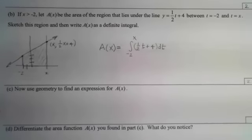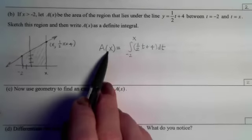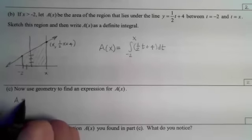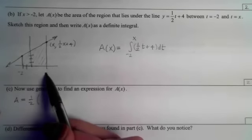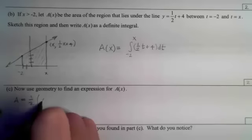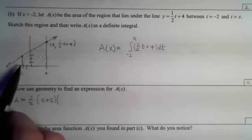Part c says we want to use geometry to find an expression for A(x). So geometry says the area of that trapezoid is going to be 1 half the base which is the right edge minus the left edge, or excuse me the height. That would be an x minus a negative 2 times the sum of the bases.